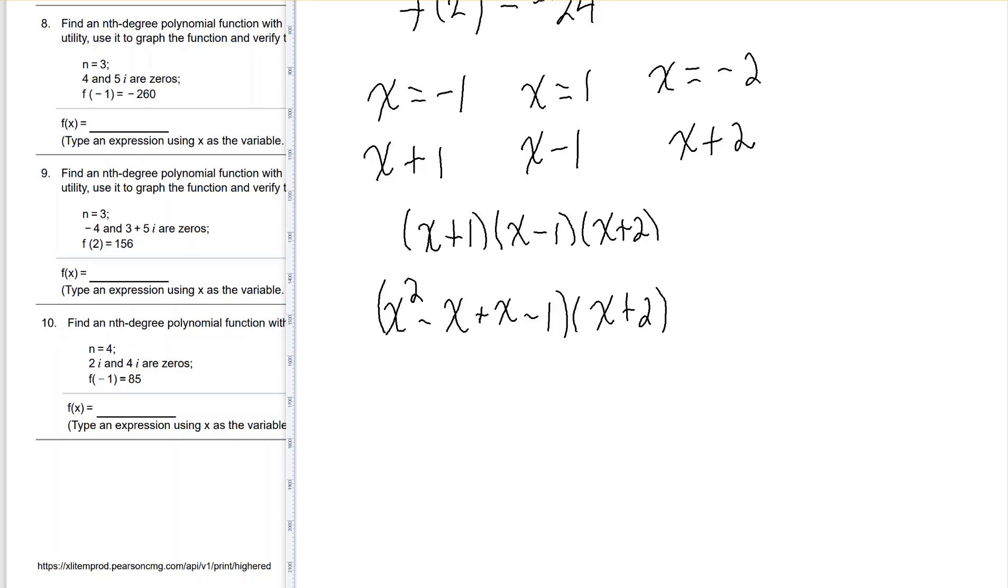And then I multiply that still by x plus 2. And combining like terms, these two terms will add to 0.